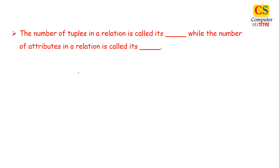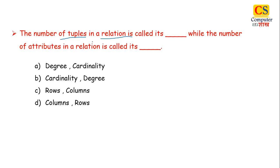The first question is, the number of tuples in a relation is called its dash while the number of attributes in a relation is called dash. Now, DBMS is a very important question. It is like if you have a table, the number of columns, the number of attributes, the number of rows, the number of tuples, what do we say?